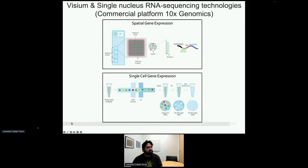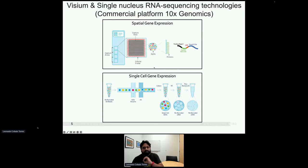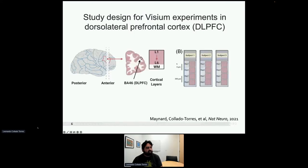We used a commercially available solution for spatial transcriptomics called Visium from 10x Genomics. It has a 6.5 millimeter square with a honeycomb pattern of spots that are about 55 micrometers in diameter. We measure gene expression at each spot using technology similar to single-cell sequencing. A single spot might contain one to five cells, so it's not quite at single-cell resolution, but it's close enough.